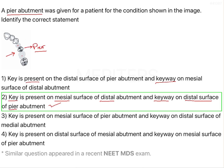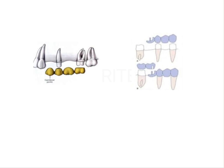Other than the non-rigid connector, you may also be asked about other treatment options for pier abutment cases. One option is a cantilever pontic — a five-unit FPD where the rigid connection is avoided and the cantilever is present in the region of the first premolar, avoiding the fulcrum on the pier abutment. Another option is the split pontic technique, where the pontic is split into two parts, again acting as a stress breaker.